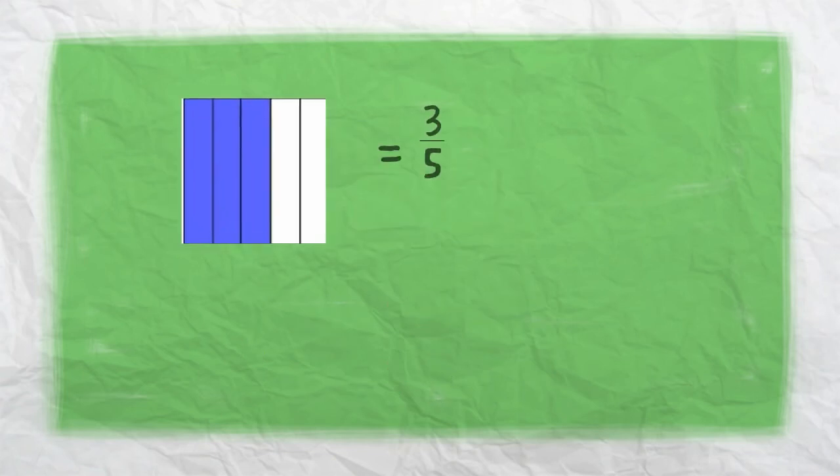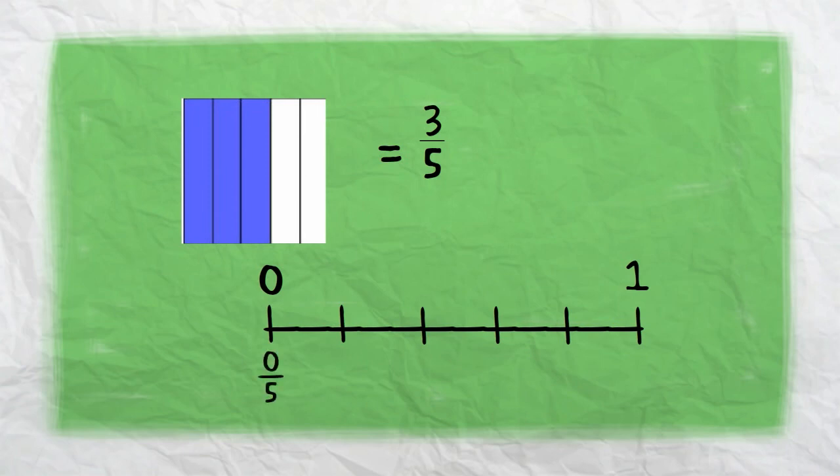Now let's represent the fraction three fifths on a number line. When we lay out a number line, we put a zero on one end, and a one on the other, and five marks after zero until we get to one.